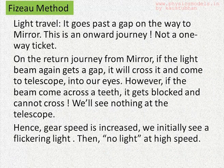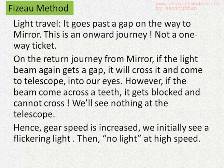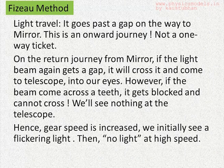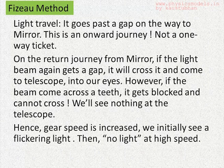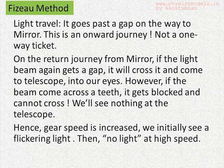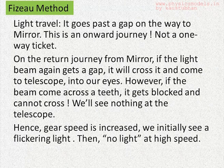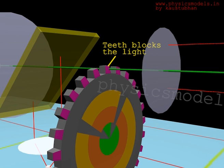The principle of the Fizeau method is that the light emanating from the glass plate will go past a gap between the teeth on the way to the mirror. That is the onward journey. On the return journey, if the light again finds a gap, of course it will come right up to the telescope and we can see it. But on the return journey, if it strikes the gear teeth, it will get blocked and we won't see light. Therefore, the speed of this rotating gear is increased gradually till we do not see light at the telescope end.